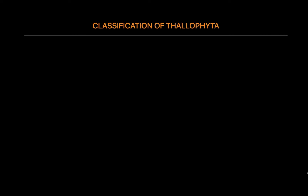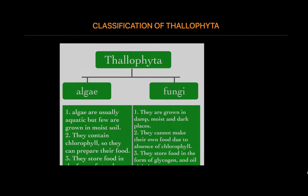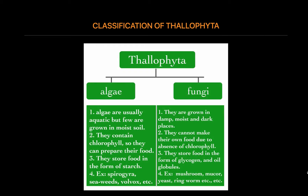Classification of Thalophyta: Thalophyta is classified into two subdivisions, algae and fungi. Algae exist in environments ranging from oceans, rivers, and lakes to ponds. Algae are usually green, but they can be found in a variety of different colors. Algae are classified into three types: red algae, green algae, and brown algae.